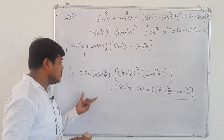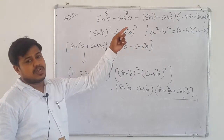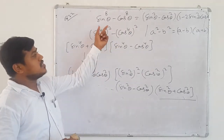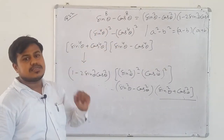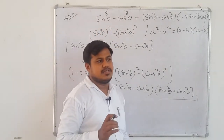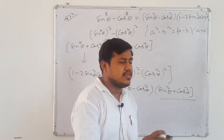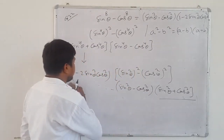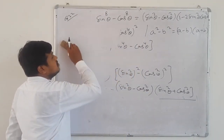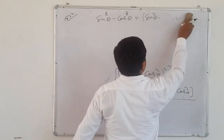So (sin²θ - cos²θ) × 1 = (sin²θ - cos²θ), and that is what you needed to prove. Hence proved. So how did you start this question? Using algebraic identity — because LCM wasn't working, rationalization wasn't working, trigonometric identity wasn't applicable.